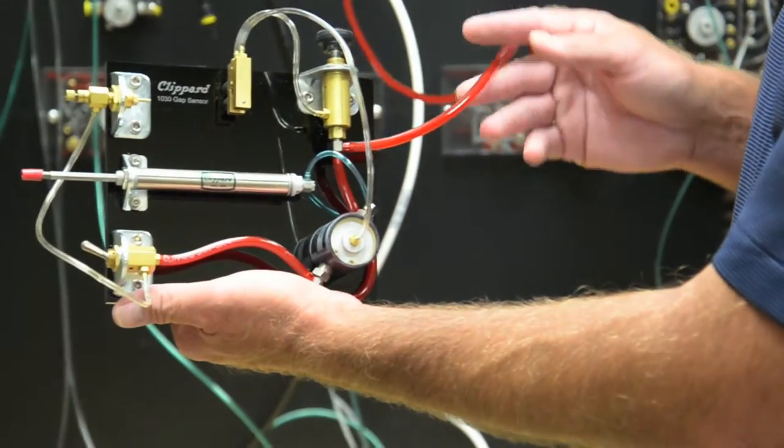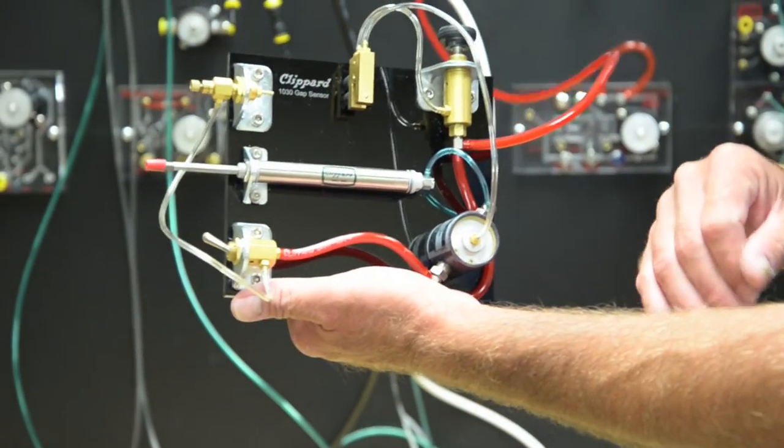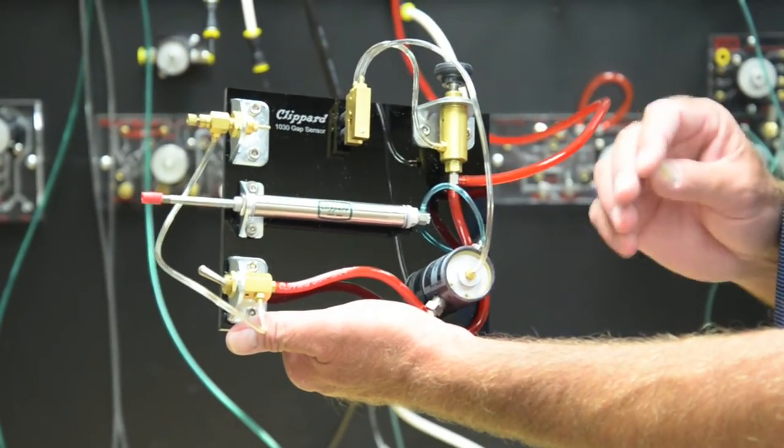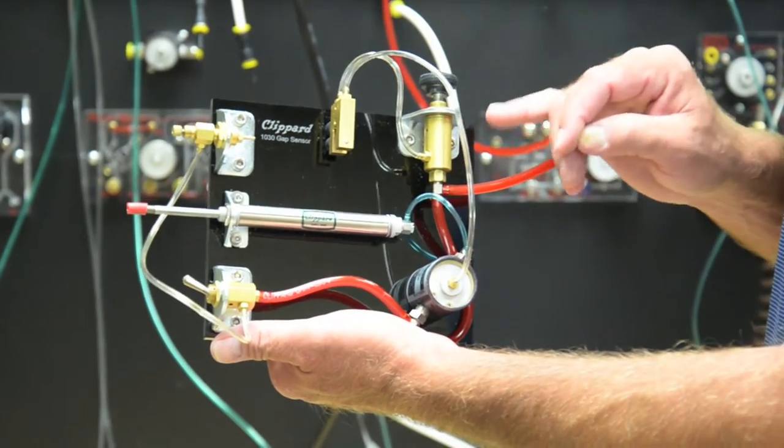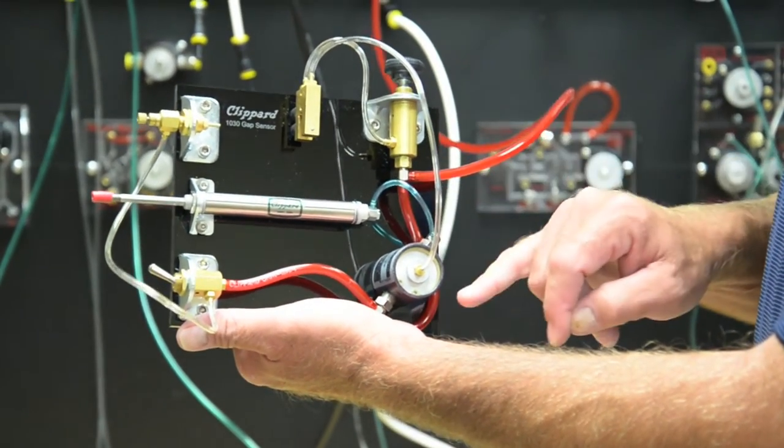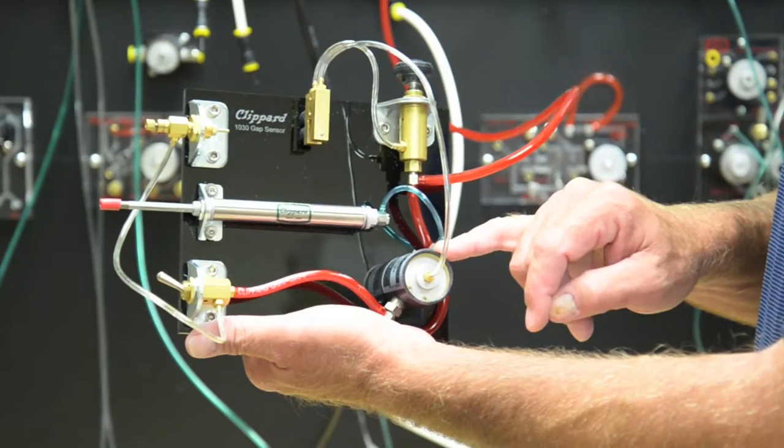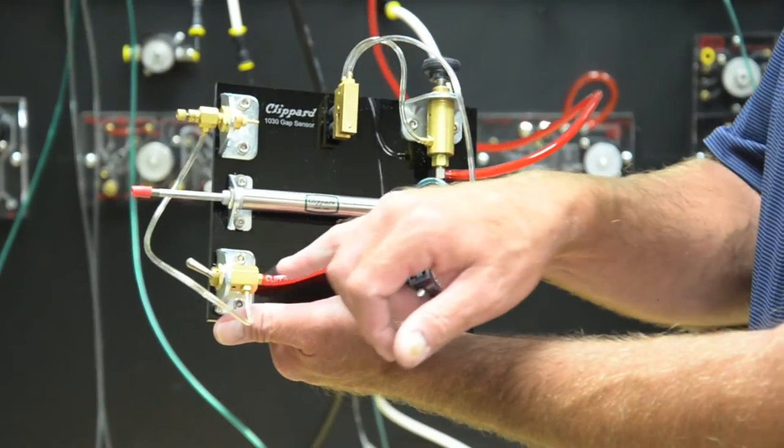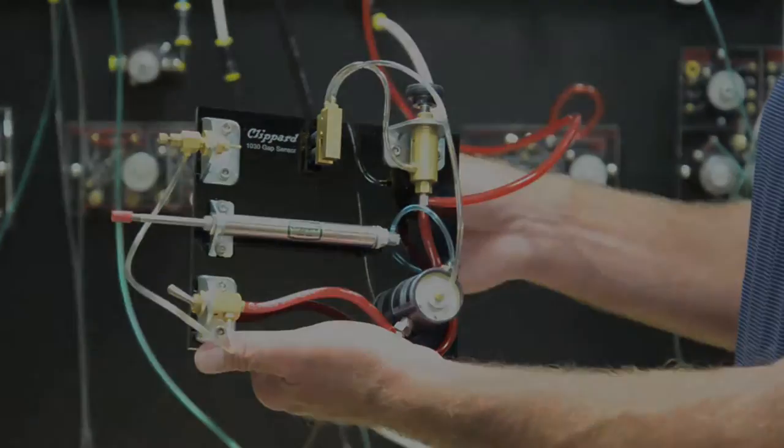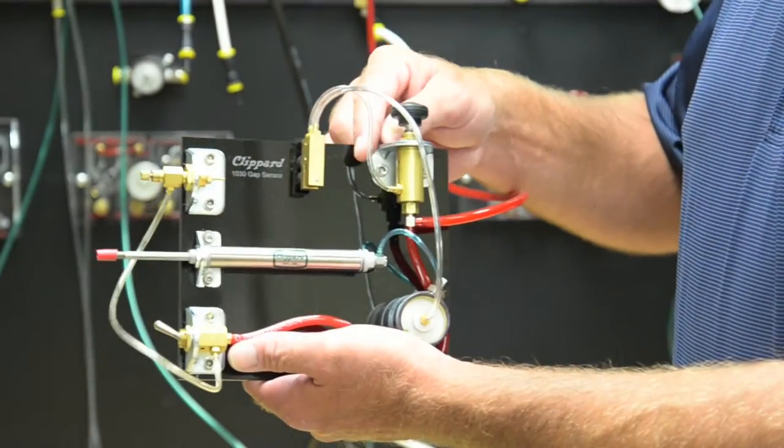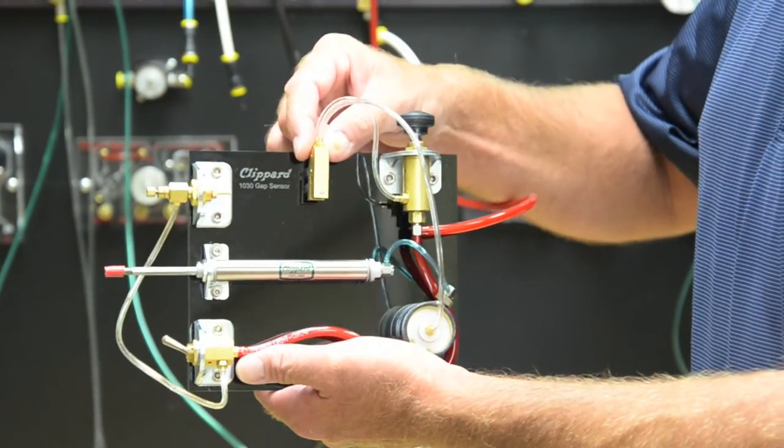Basically what we have is supply pressure coming in to our MAR-1-2 0-20 PSI miniature regulator. Supply pressure also comes down to the 20-10 low pressure control valve and also supplying our TV2 toggle valve. We have the regulator set at approximately 5 PSI going to the 1030 gap sensor.